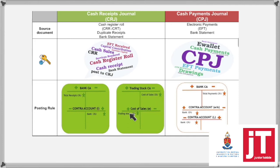We have to record cost of sales — what did we sell? The goods. So we have to record the goods there, minusing trading stock. For the CPJ, our source documents are EFTs or bank statements, e-wallets, cash payments. What did we pay? Drawings. The general rule is that we will credit bank and debit the contra accounts — debit the contra accounts for the debit entry.